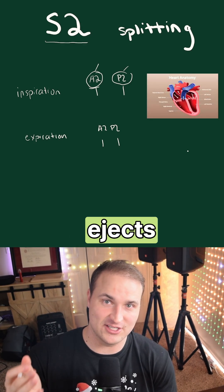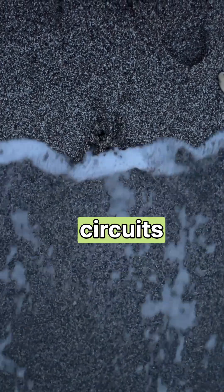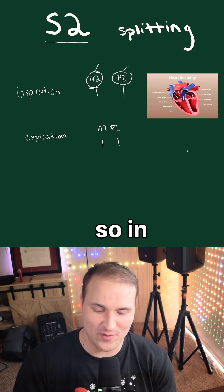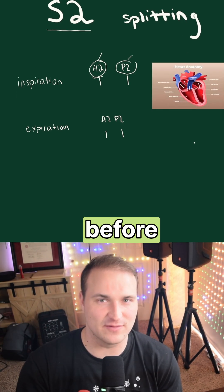The right ventricle ejects into a low-pressure pulmonary circuit and it has a slightly longer tail. And so, in baseline, A2 is just before P2.